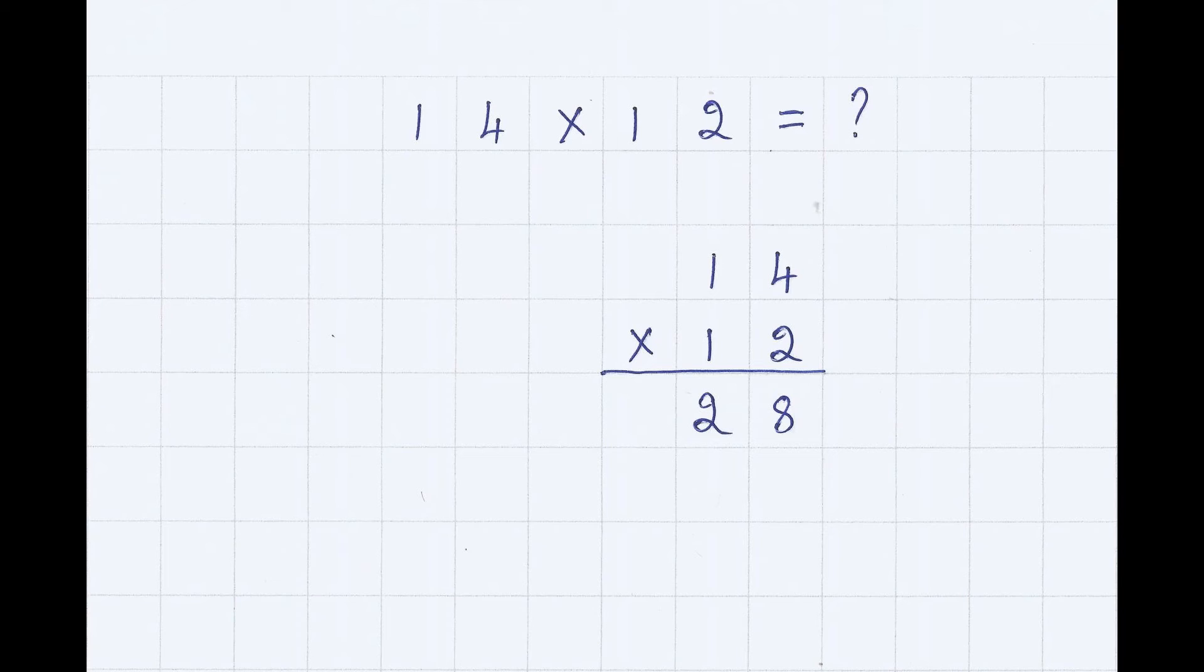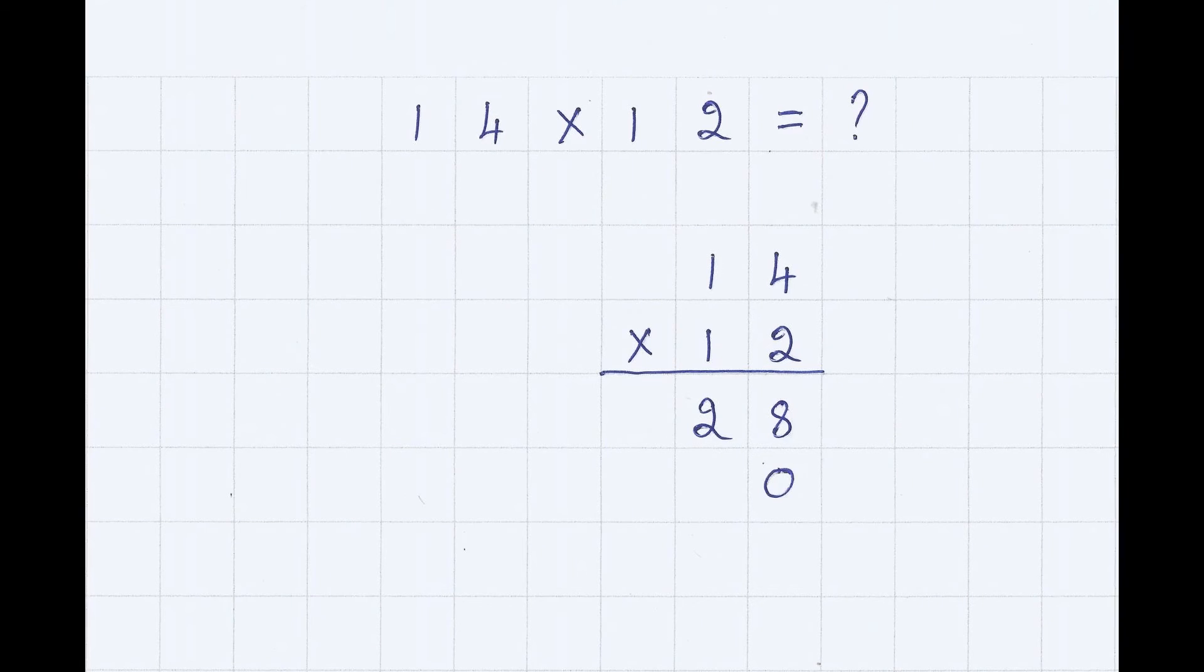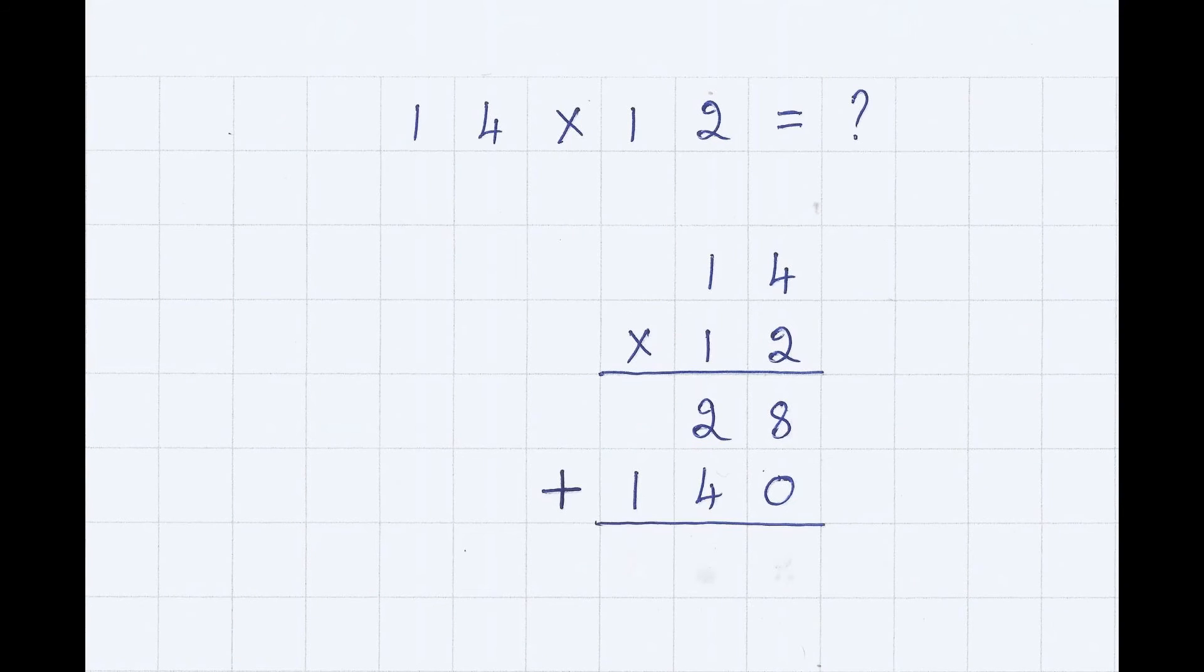Now, let's move to multiplying by 1 of the multiplier. 1 multiplied by 4 is 4, and 1 multiplied by 1 is 1. So we have 140. Adding these, we get the product 168.